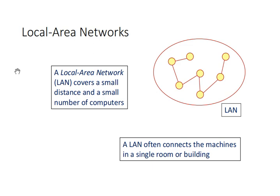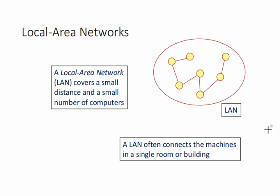We have different kinds of networks depending on location, distance, and number of computers. A Local Area Network (LAN) covers a small distance and a small number of computers. Within an organization like UNZA, we have a LAN, commonly known as the IDROM. A LAN often connects machines in a single room or building — take note of that: single room or building is the basic definition of a local area network.